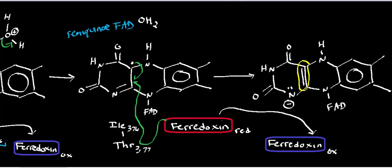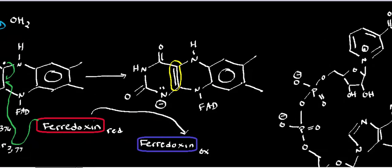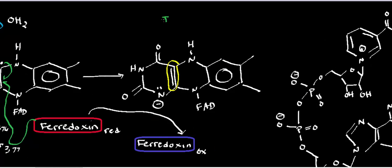When that double bond forms, the pi electrons kick up onto the nitrogen to allow for its formation. What we ultimately get is FADH minus. Now what's going to happen is we're going to eliminate a hydride. The lone pair on the nitrogen kicks in to form a double bond, and that double bond rearranges, eliminating a hydride.